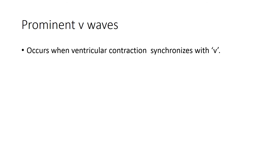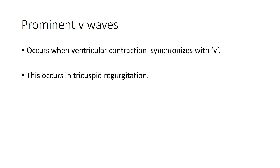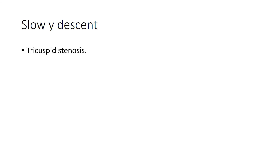Prominent V waves occur when ventricular contraction coincides with V — the maximum pressure of the atrium before the tricuspid valve opens — and this can occur in tricuspid regurgitation, where C and V waves merge together to form a prominent wave. Slow Y descent occurs with tricuspid stenosis and right atrial myxoma. Thank you for listening.